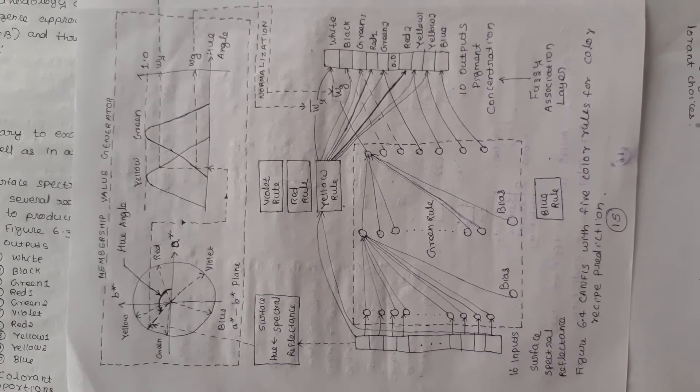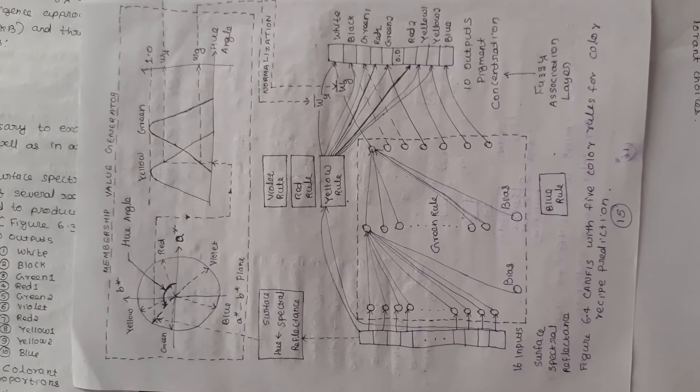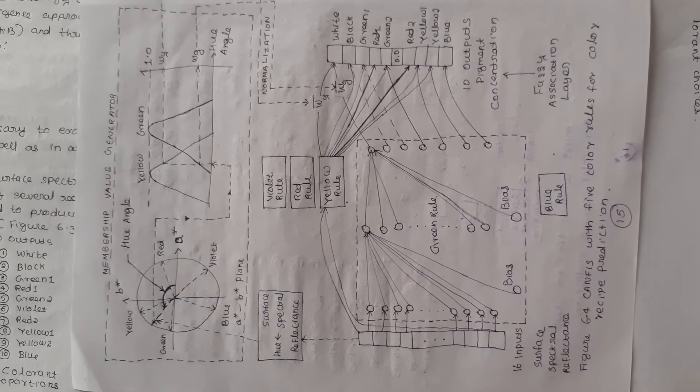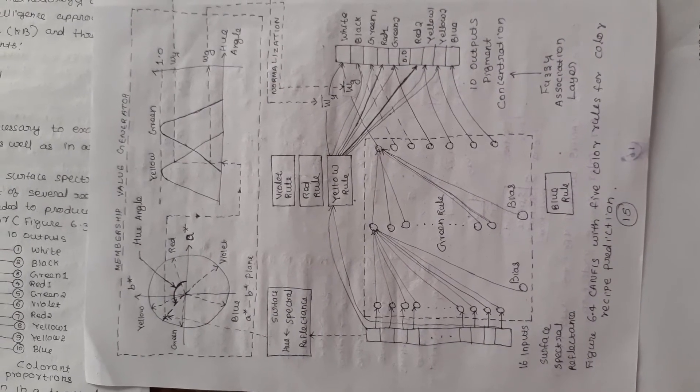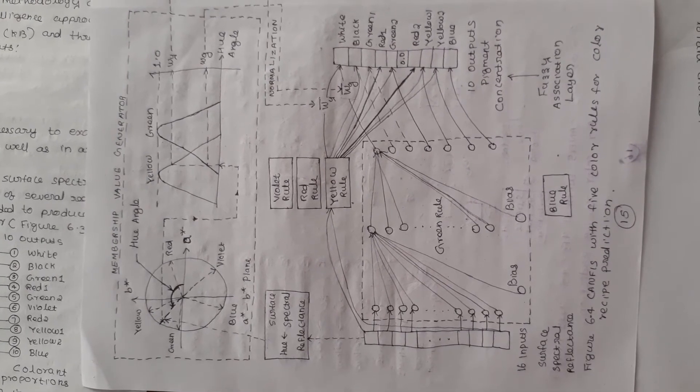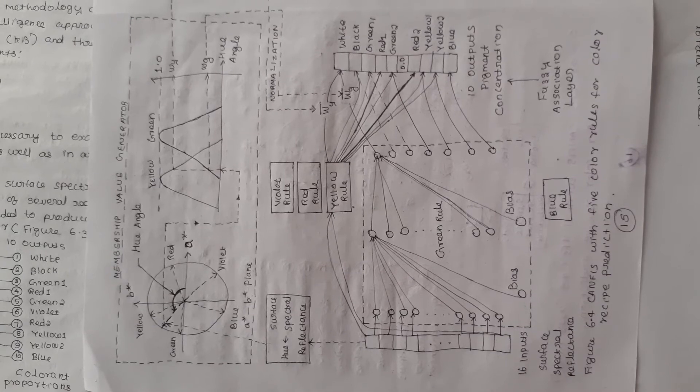In the preceding yellow rule, the firing strength W-Y is determined by the yellow membership function. Consider a case in which each color region has three membership functions to express its three degrees of color.